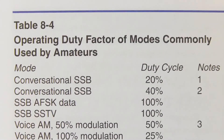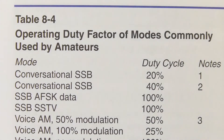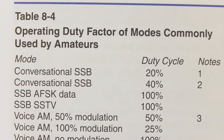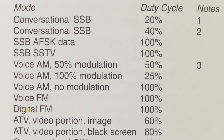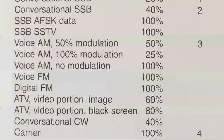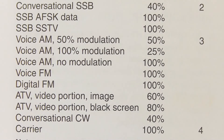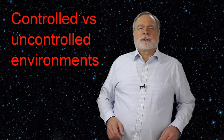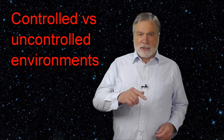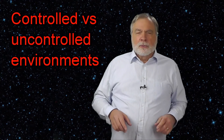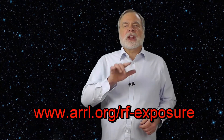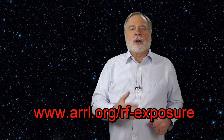The duty cycle varies substantially with different modes and is often much less than you might expect. For example, with single sideband, your 100-watt transmitter emits 100 watts only on voice peaks, so the average power is much less. Then you have to take into account that in a conversation, you're only using your transmitter half the time. Table 8-4 lists typical duty cycles for various modes. The book does a good job describing controlled environments — meaning people in the environment know about the hazard and take ordinary precautions — and uncontrolled environments where people exposed have no idea they're being exposed. The ARRL website has many documents describing RF exposure limits in great detail, and it lists an online calculator at hintlink.com/power_density.htm.